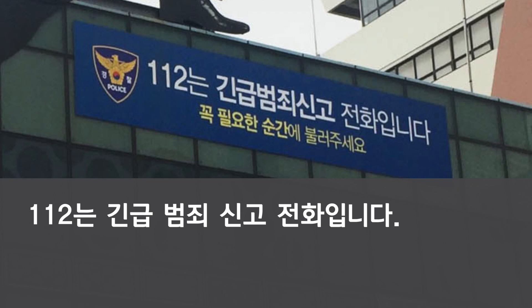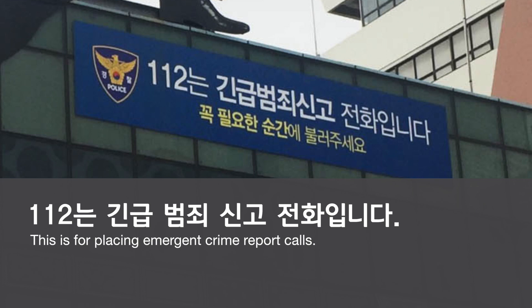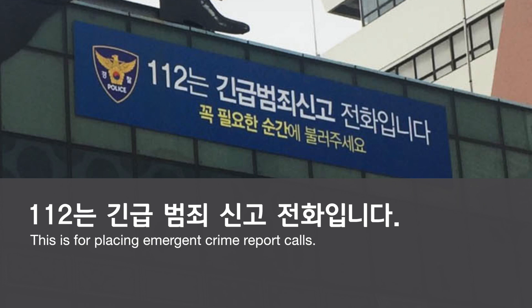The last line is easier than the other two: 112는 긴급 범죄 신고 전화입니다. 112 is 긴급 — emergency once again. 범죄 is crime. 범죄 신고 — crime report. 전화입니다 — it is a phone call. So 112 is for placing urgent crime report calls.